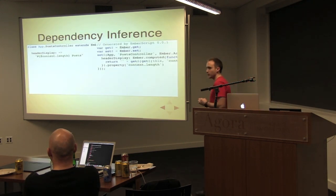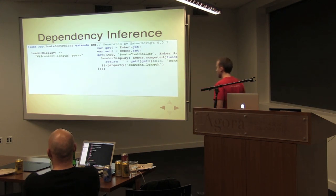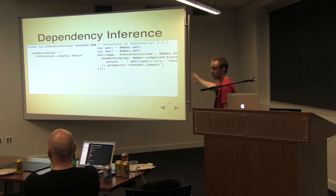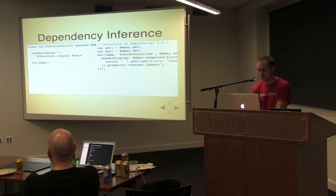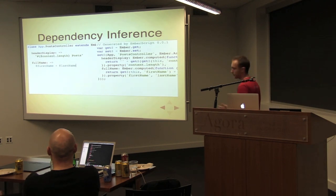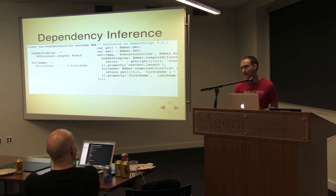What's really cool is because Emberscript is a compiled language, there's even cooler stuff you can do — and this is what I'm most excited about. This is the same method as the last slide, but the method is declared using a tilde instead of a dash. What this does is it automatically turns it into a computed property, and moreover, it actually looks at the syntax tree of the method and determines the dependencies. So in this case, it knows to watch content.length because it's used inside the method body. For example, a computed property that depends on two other properties will automatically infer first name and last name as dependencies — it just works.